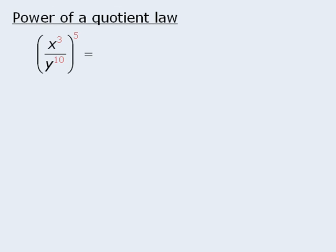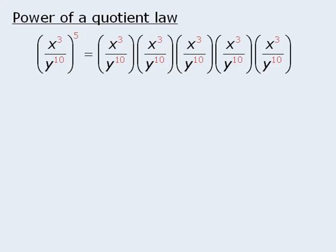Now the next law is similar to the last one. To set up the power of a quotient law, please consider the following example. One way to simplify this is to first rewrite it as follows. When we multiply all of the numerators, we get x to the power of 15. And when we multiply all of the denominators, we get y to the power of 50. Notice that when we take the outside exponent 5 and multiply it by the two inside exponents, we get these new exponents.